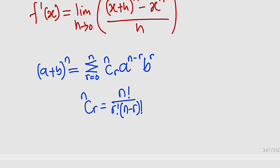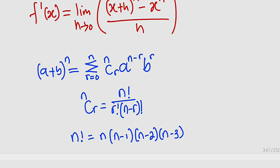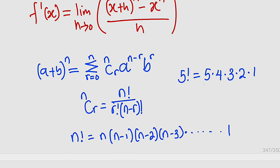What is n factorial? n factorial is equal to n multiplied by n minus 1 multiplied by n minus 2, and you keep multiplying till you get to 1. For example, 5 factorial is 5 times 4 times 3 times 2 times 1. We are reducing by 1 each time. This implies that n is a positive integer.